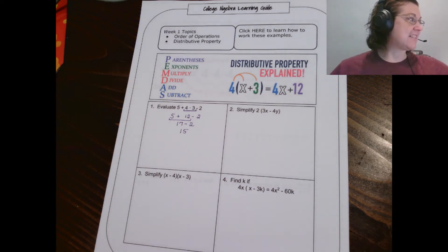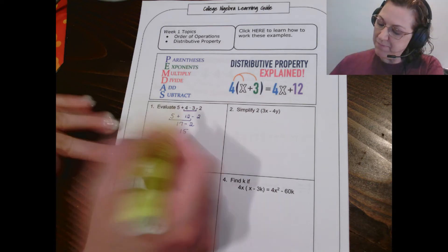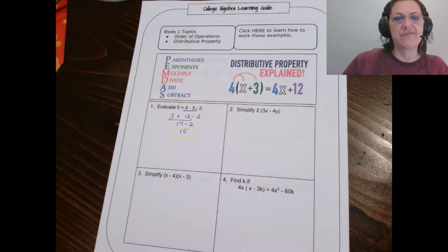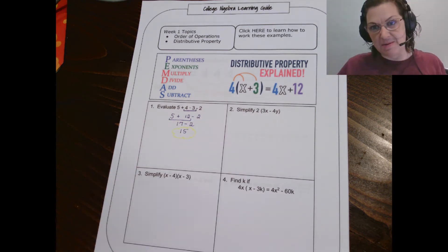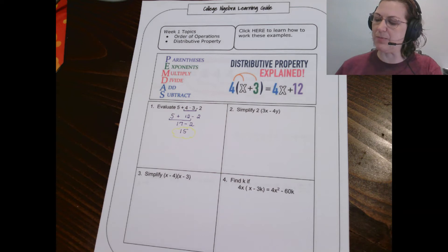I bet you can guess that probably the most common error is that people want to go in order from left to right, meaning they want to add that 5 plus 4, and then multiply by 3, and then subtract 2. But in fact, what we should actually do is to follow the order of operations. So, hopefully, that helps you.